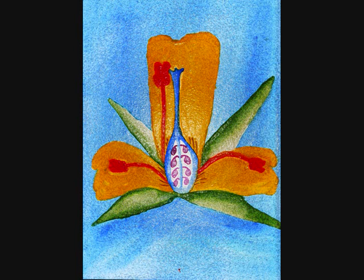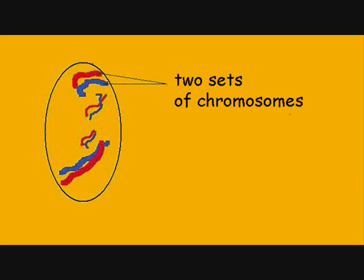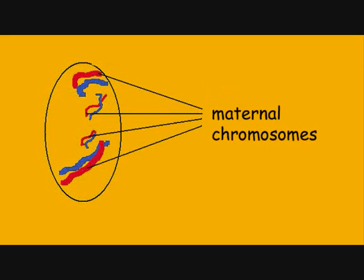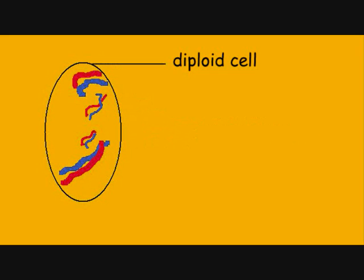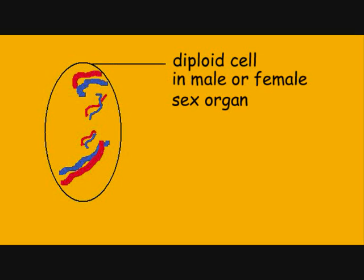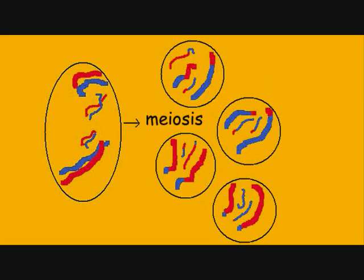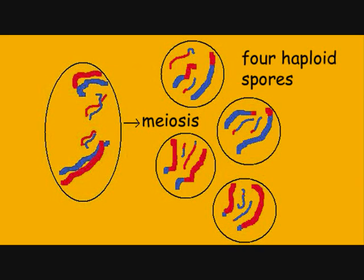In most plants, the cells of the flower will contain two sets of chromosomes, a maternal set and a paternal set. These cells are genetically described as being diploid because they have two sets of chromosomes. Specialized cells in the male and female organs will undergo meiosis to make haploid cells called spores. Haploid cells contain only one set of chromosomes coming from either parent.